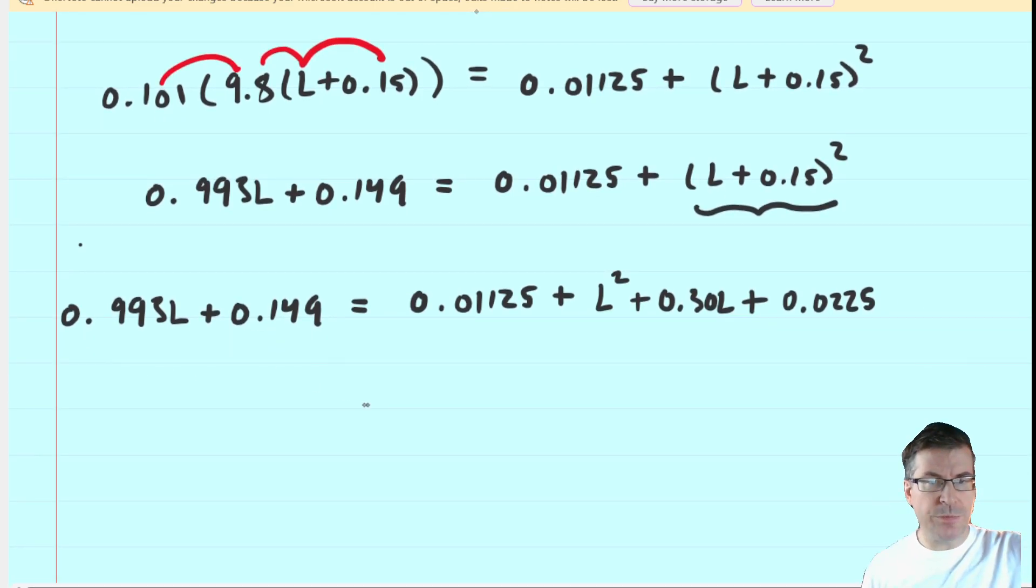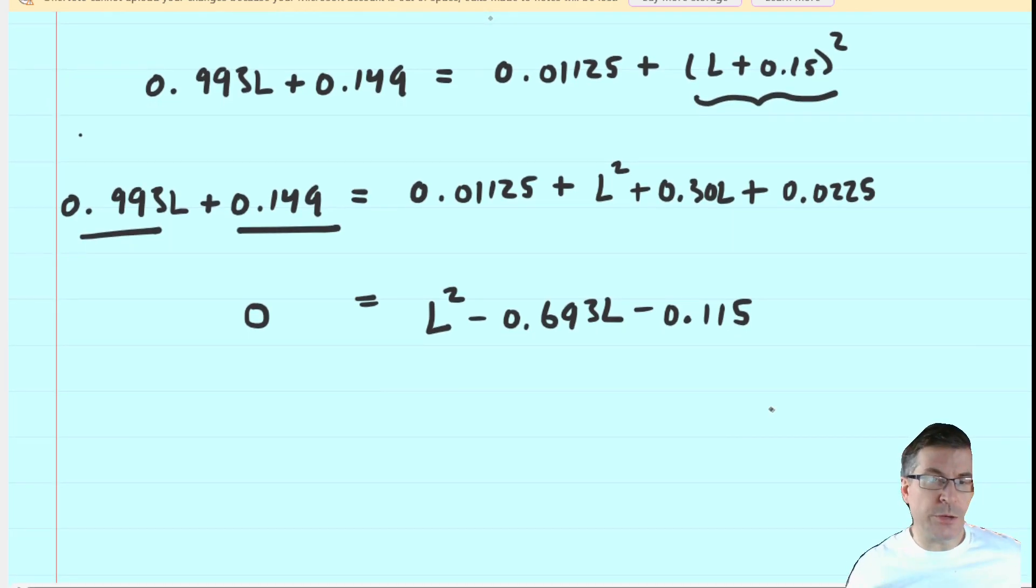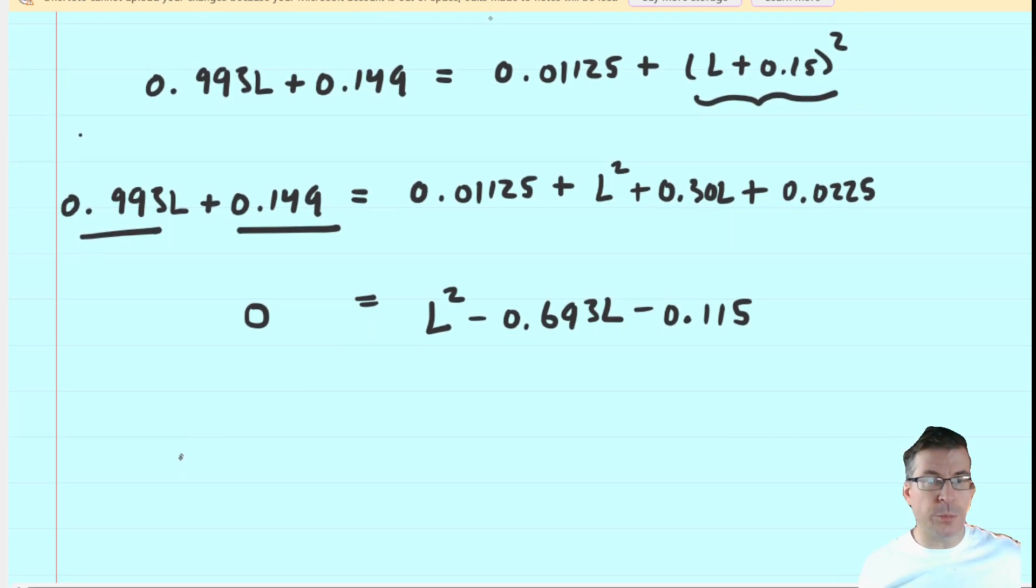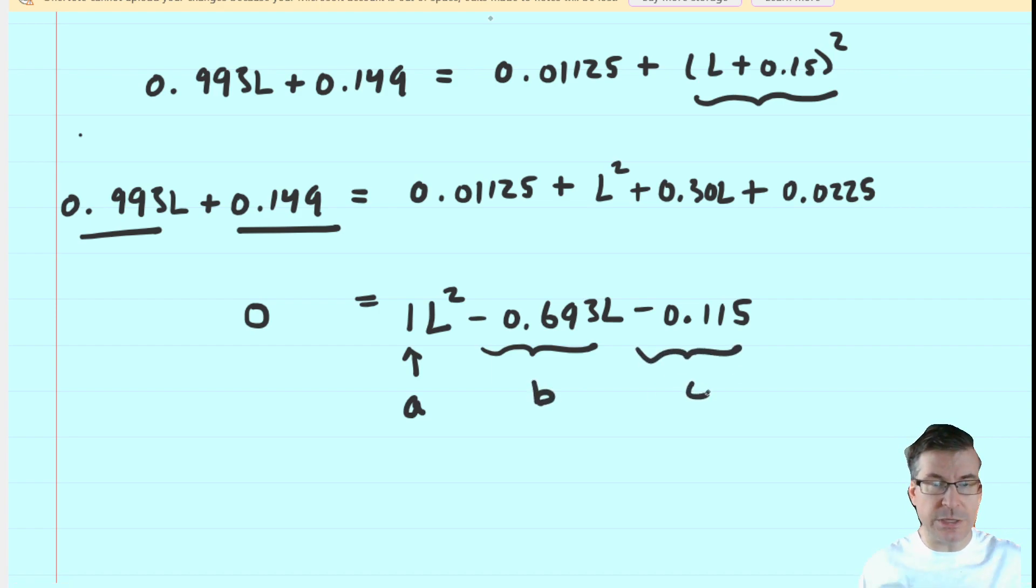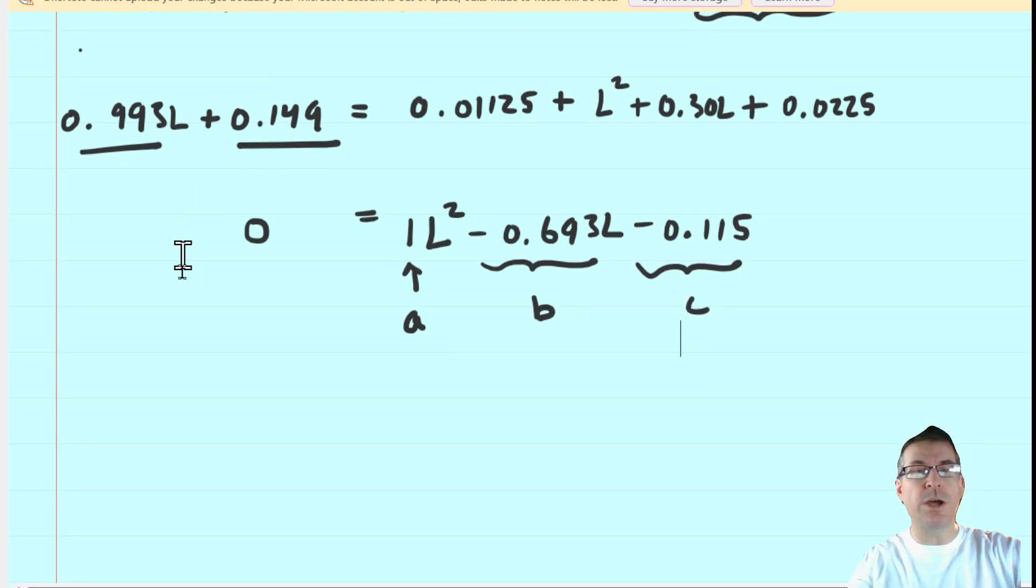We will then move everything to the right hand side so that we can get the equation equal to zero. You are going to subtract that term from both sides, subtract that term from both sides. We are left with the quadratic equation in a standard form, so we have to use the quadratic formula. The coefficient of l squared is going to be our a value. The coefficient of l is going to be b, and then the constant will be c. So we are going to plug those into the quadratic formula.